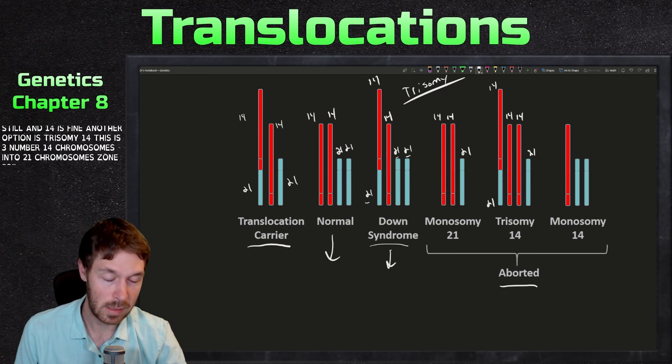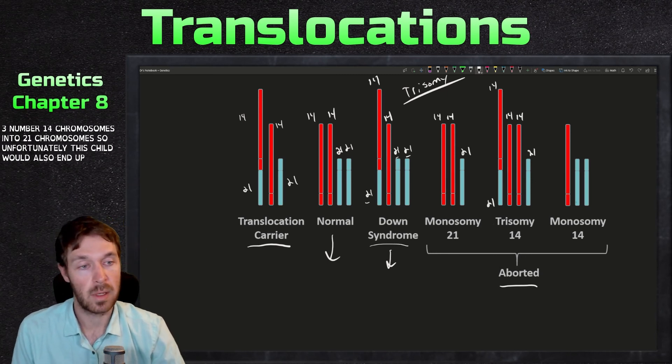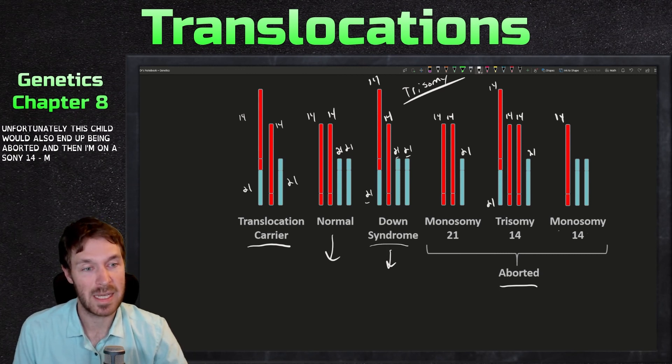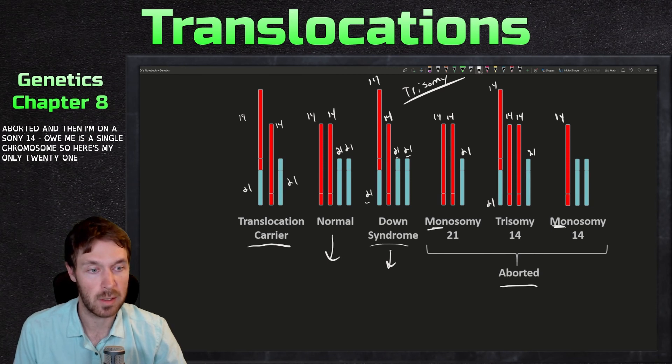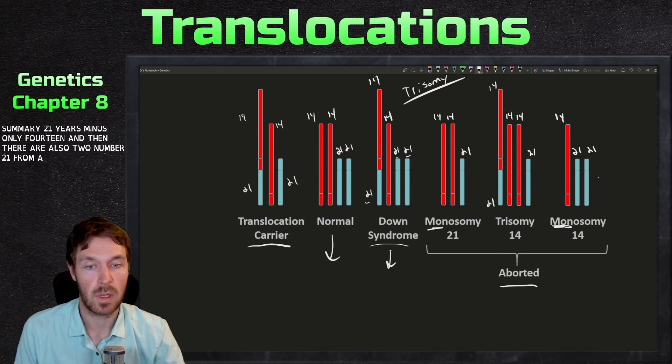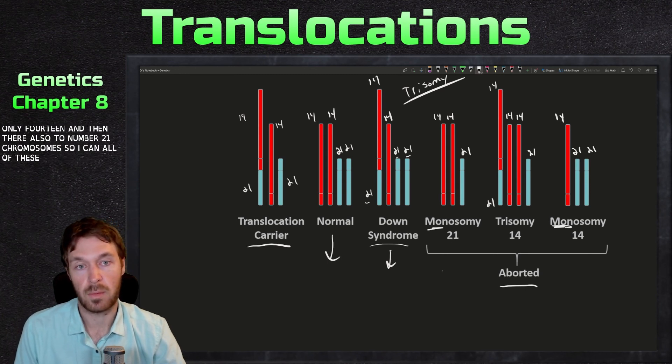And then a monosomy 14. Monosomy is a single chromosome. So here's monosomy 21. Here's monosomy 14. And then there are also two number 21 chromosomes. So again, all of these wouldn't survive, but these three possibilities would survive.